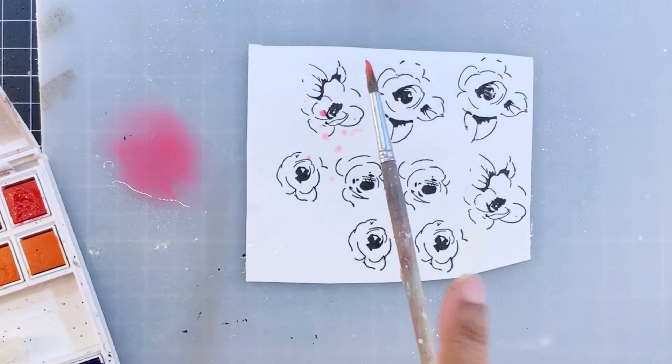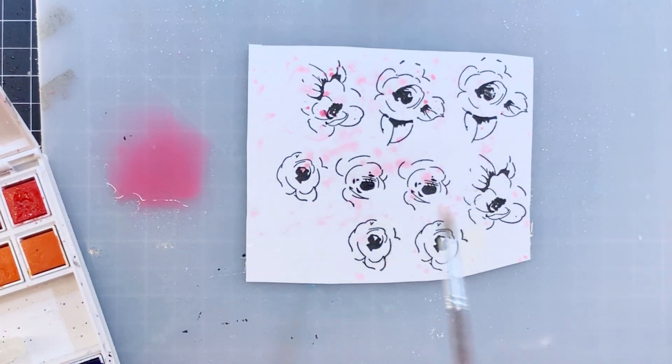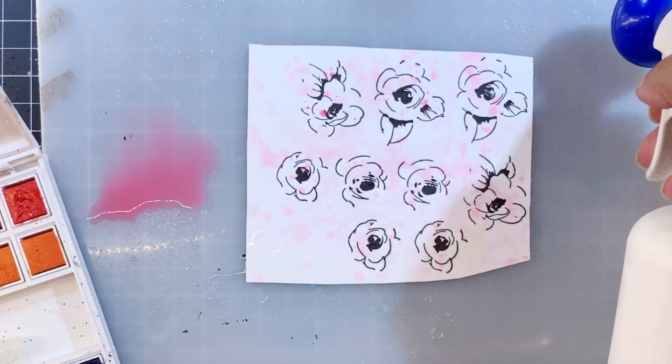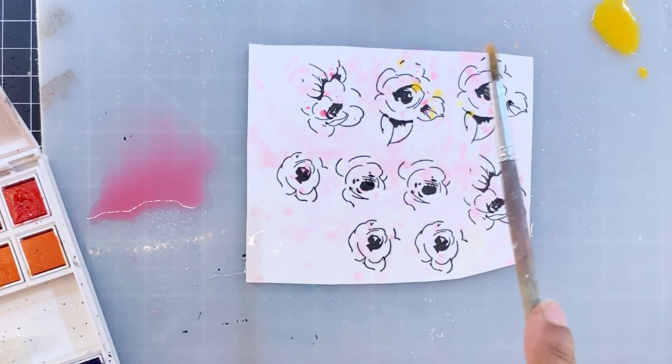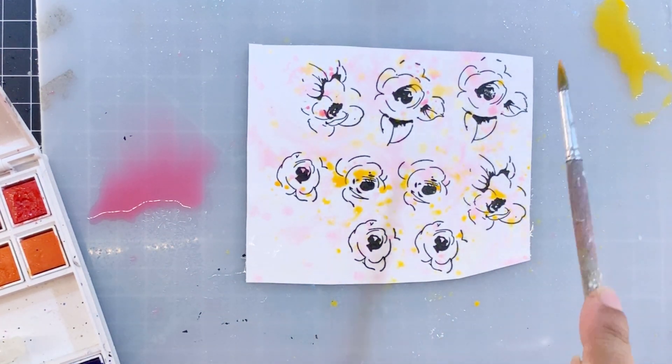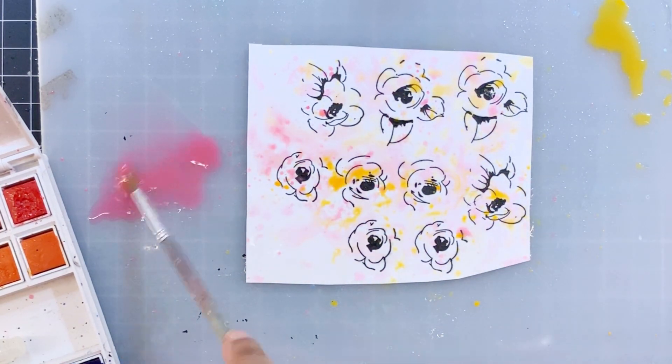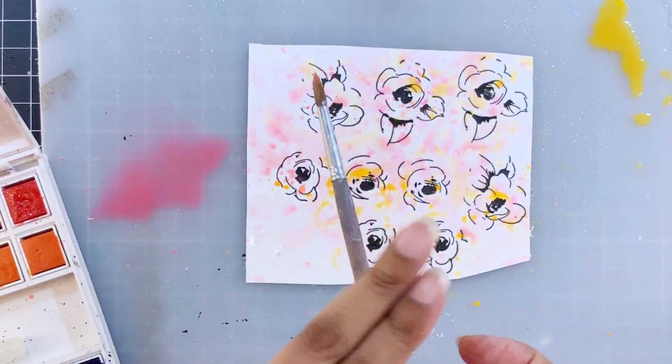Next I'll use a bit of diluted coral berry pigment from the 36 pan watercolour set and add splatters of this on the already wet watercolour paper. I will be using a mix of orange, yellow and pink today and I'll keep on adding the splatters till I'm happy with the result.